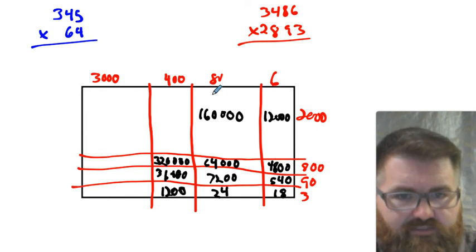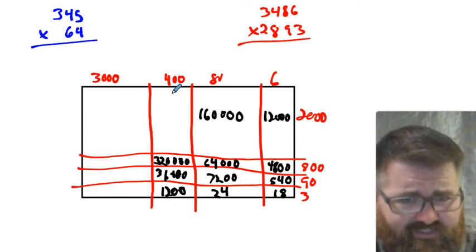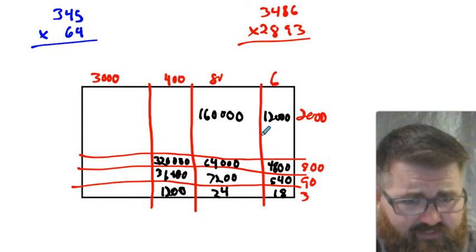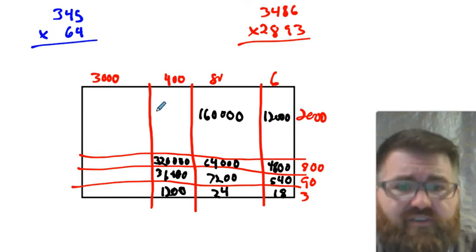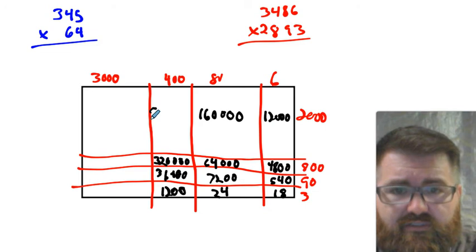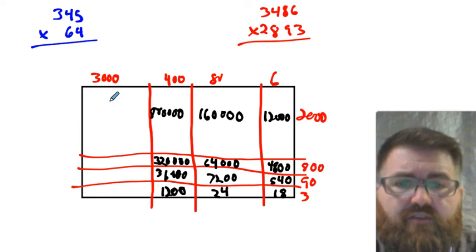400 times 2,000 — that's 100s times 1,000s, that's 100,000s. 4 times 2 is 8, so that's 800,000.